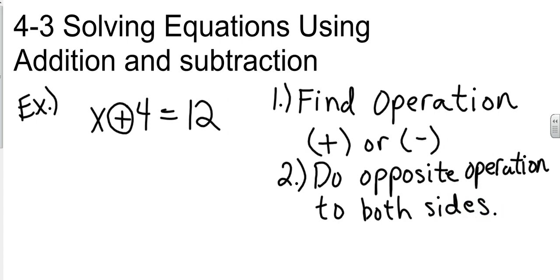And our goal here is to get x by itself. So I want to move that positive 4. So the operation is addition. I'm adding the 4. Step 2 says do the opposite. So what's the opposite of addition? The opposite of addition is subtraction. So I'm going to subtract 4 from both sides.